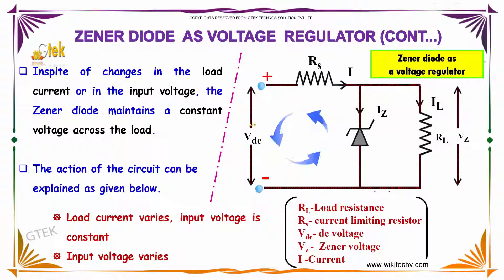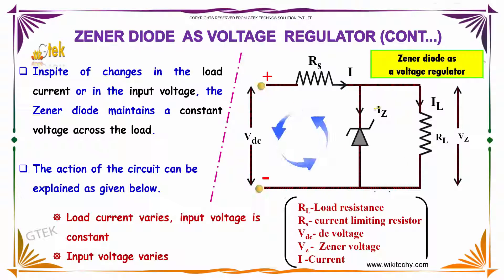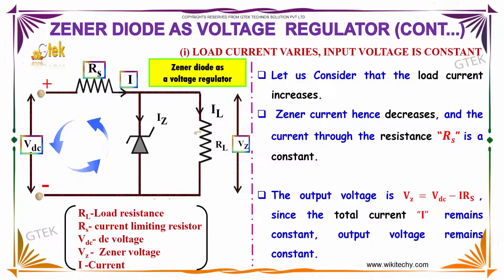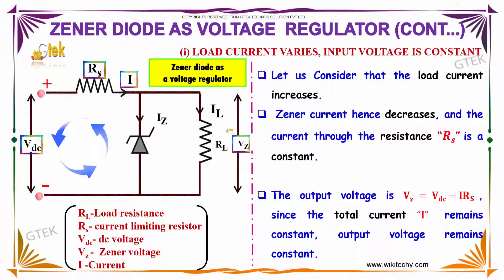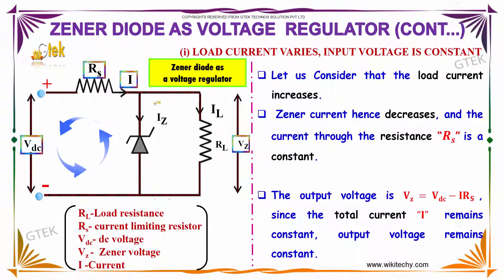In spite of changes in the load current or input voltage, the Zener Diode maintains a constant voltage across the load. When the load current varies and input voltage is constant, the Zener current decreases and the current through the resistance RS remains constant. The output voltage VZ equals VDC minus I times RS. Since the total current I remains constant, the output voltage also remains constant.